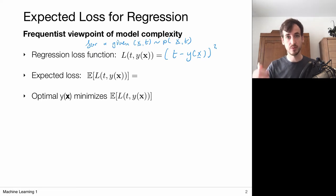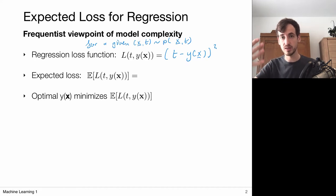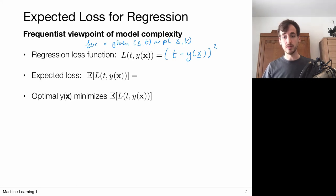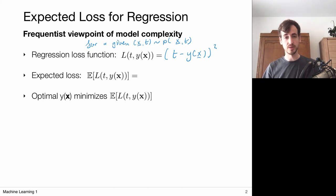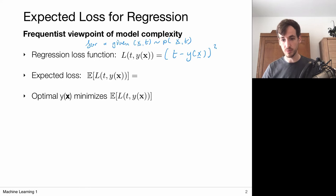We've seen the example of the sine wave quite often, where we assume a true model with some noise on it — this really gives a probability distribution. Now, suppose we know the distribution that generated our data points. Then we can compute the expected loss, because for one dataset we observe a bunch of data points according to some probabilities, and that gives a loss. If we again observe this dataset, we get a new loss, and the expectation over all possible observations gives the expected loss.